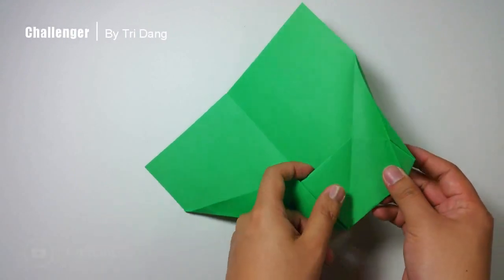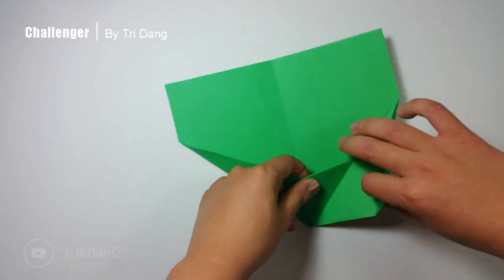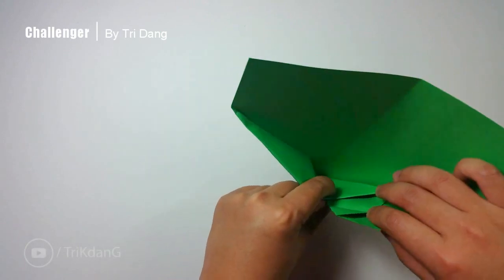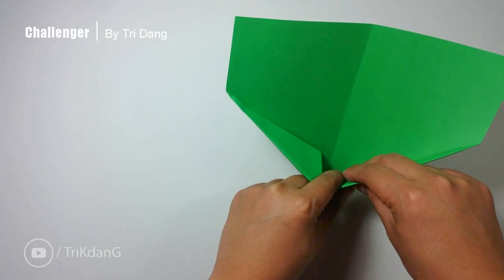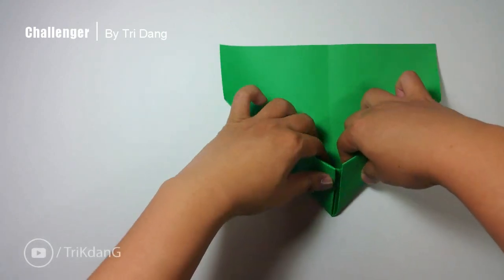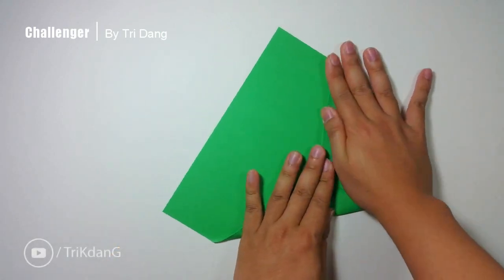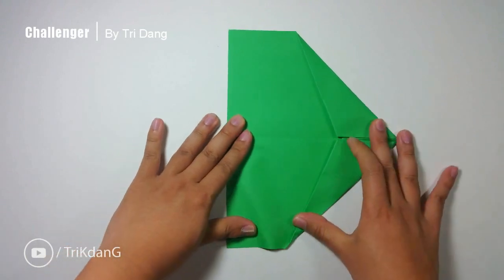And repeat the same fold for the opposite side. Hold the pocket and put this paper inside. And this is what you should have for now.